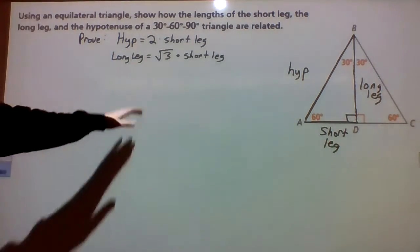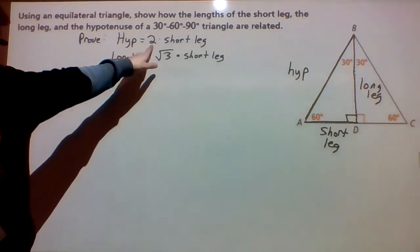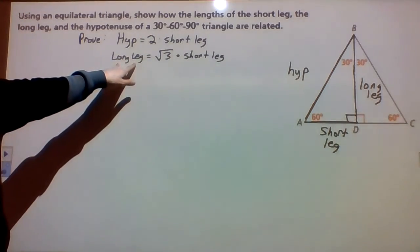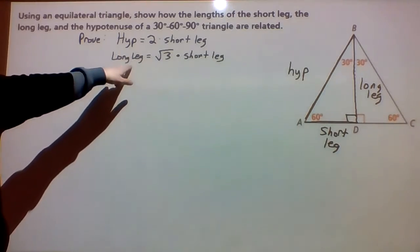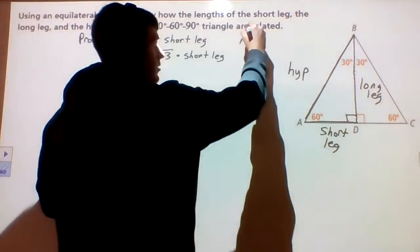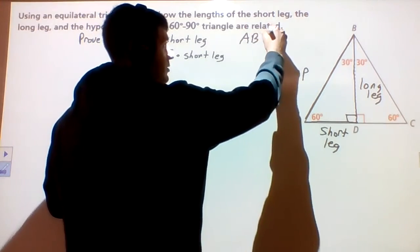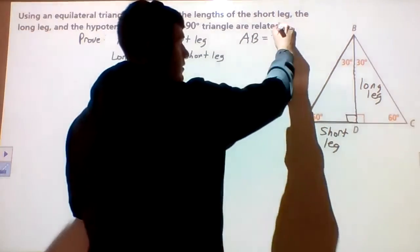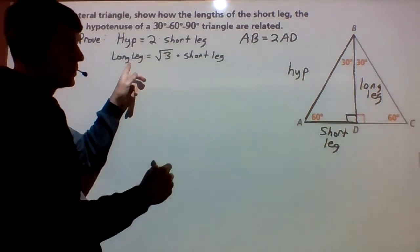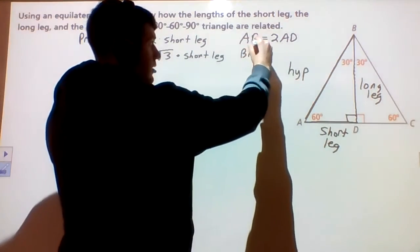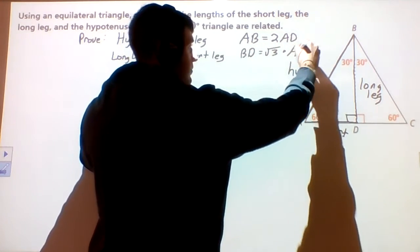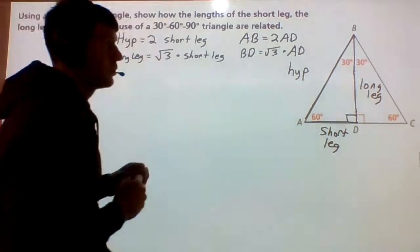So we're trying to prove here that our hypotenuse AB is equal to 2 times AD. Let's write this down. The hypotenuse here, AB — we're trying to show that AB is equal to 2 times AD. And we're trying to show the long leg here, which is BD, is equal to the square root of 3 times the short leg, which is AD. That's what we're trying to prove.